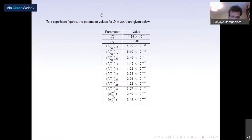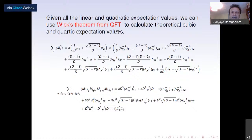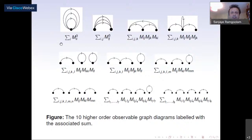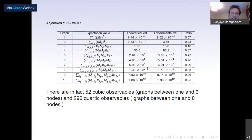Taking those parameter values, feeding them back into the theory, and looking at expectation values of cubic and quartic observables gives functions of d and the lambda and mu parameters. The experimental average is simply the average over words. The selection of cubic and quartic observables ranges from having one node up to five or six different nodes in their graph representation, and for each observable you calculate both the theoretical and experimental expectation value.